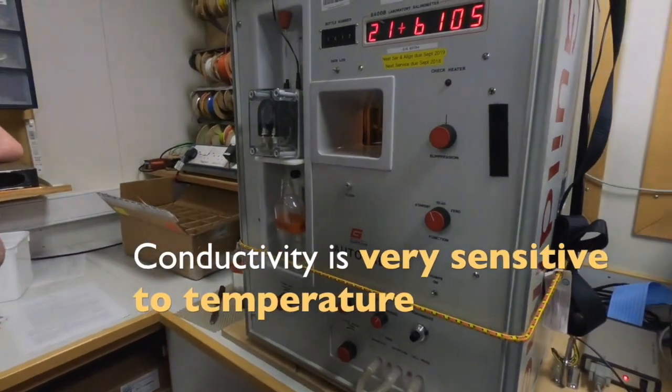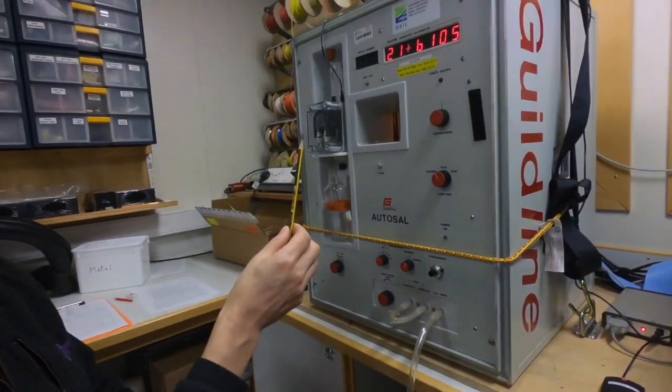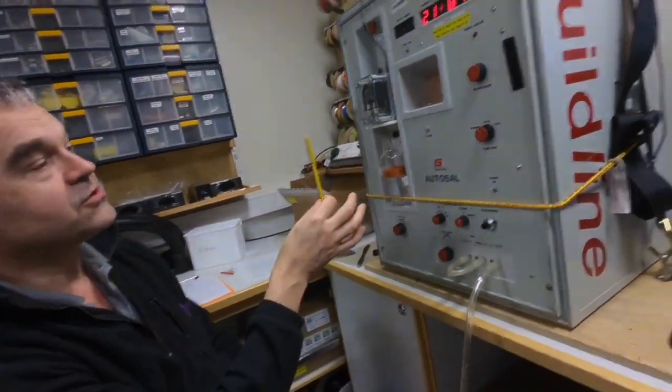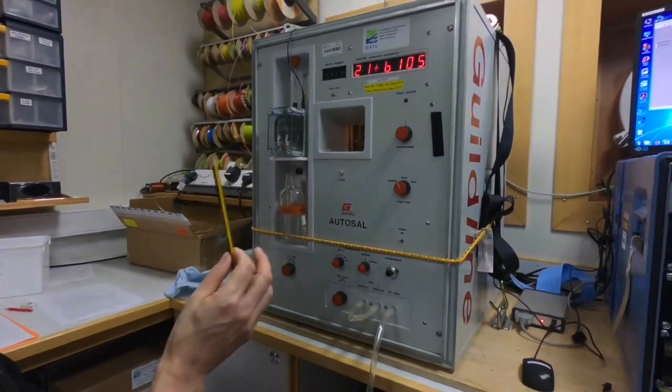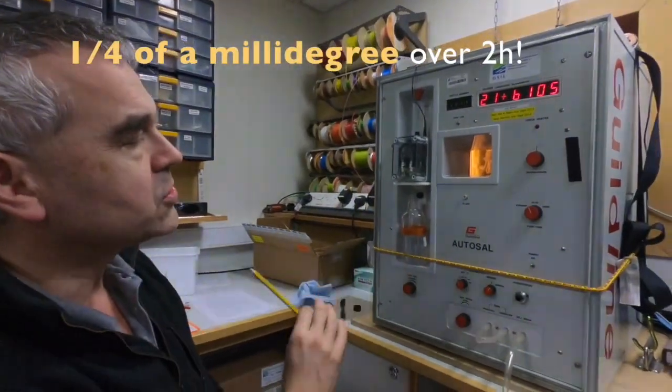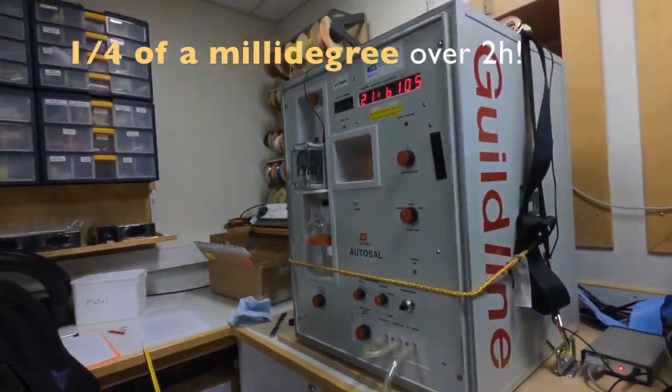The water in the cell is of a very precisely controlled temperature. They flash on to warm the bath a bit and then they flash off to allow the bath to be cooled, and that means that the temperature is being maintained to within about a quarter of a millidegree over a two hour period.